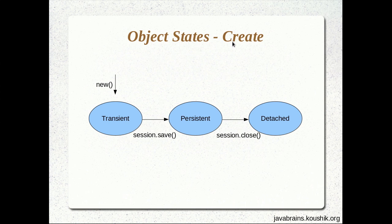Let's start with the create. We did a new object — we had a UserDetails object. The object that was created was in a transient state; we had not asked Hibernate to save it. When we do a session.save, the same object becomes a persistent object. Once in persistent state, Hibernate keeps track of the changes and updates the database accordingly. And once we do a session.close, it moves from being persistent to detached. So this is the flow for a create.